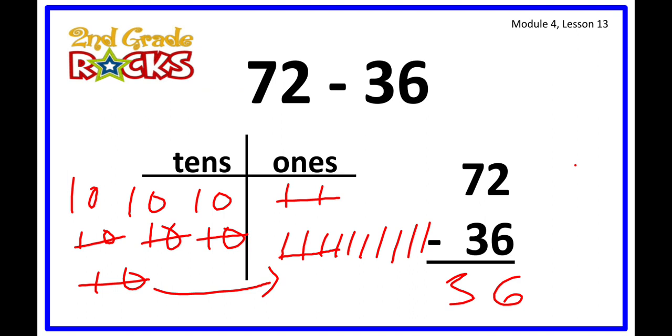And now to the tens side by removing our three 10s. So after doing that we have three 10s remaining. So 72 minus 36 is 36.